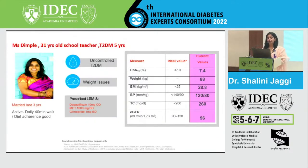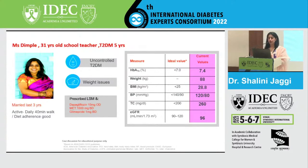Moving to our second case: Dimple, a 31-year-old school teacher with a 5-year history of type 2 diabetes. Her HbA1c is currently 7.4%, BMI is 28.8. She is already on an SGLT2 inhibitor, metformin, and glimepiride — three OADs — and is doing a 40-minute daily walk with good diet adherence, yet her glucose levels remain uncontrolled.